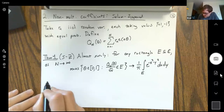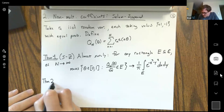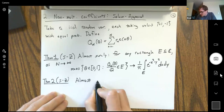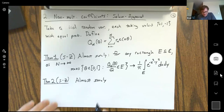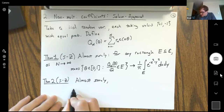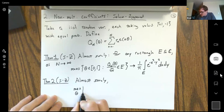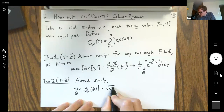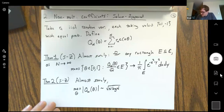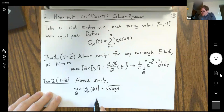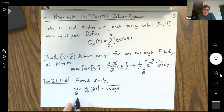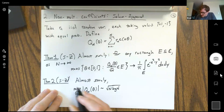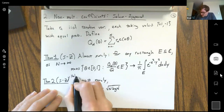They also showed that almost surely, the maximum value of these polynomials as you go around the unit circle is of order √(N) · √(log N). Salem and Zygmund showed the order of this maximum; the result that it's asymptotic to √(N log N) is actually due to Halász.